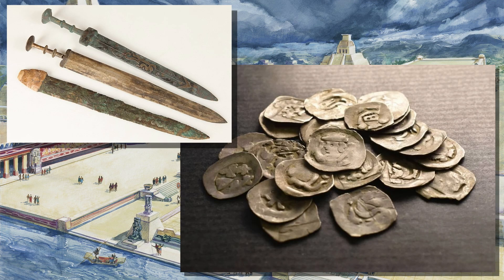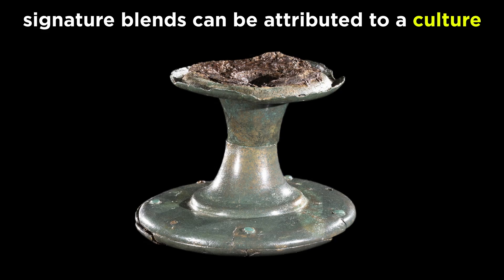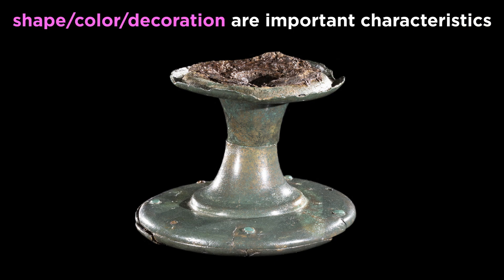Metal artifacts are also grouped into typologies, from bronze swords to silver coins. One of the most important characteristics of metal artifacts is identifying the type of metal used in its creation. Metallography can reveal the exact proportions of different elements used in an alloy. Like ceramics, many cultures had signature blends we can look for to attribute the artifact. Shape, color, and decoration are other describable characteristics of metal artifacts.